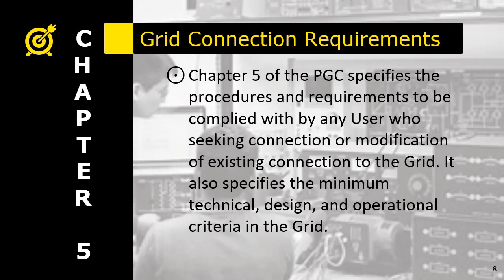Chapter 5 is the grid connection requirements, where it specifies the procedures and requirements to be complied with by any user seeking connection or modification of an existing connection to the grid. This covers all grid users such as distribution line owners like Meralco or any cooperative, which are primary consumers of the grid. It also specifies the minimum technical design and operational criteria in the grid, helping you become familiar with grid connection standards and requirements.